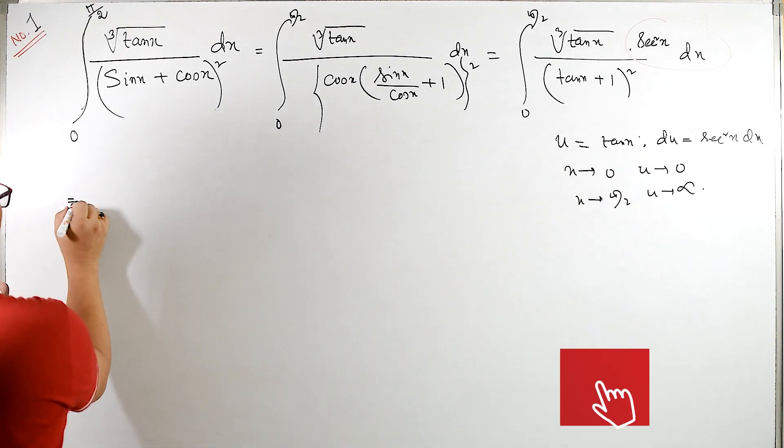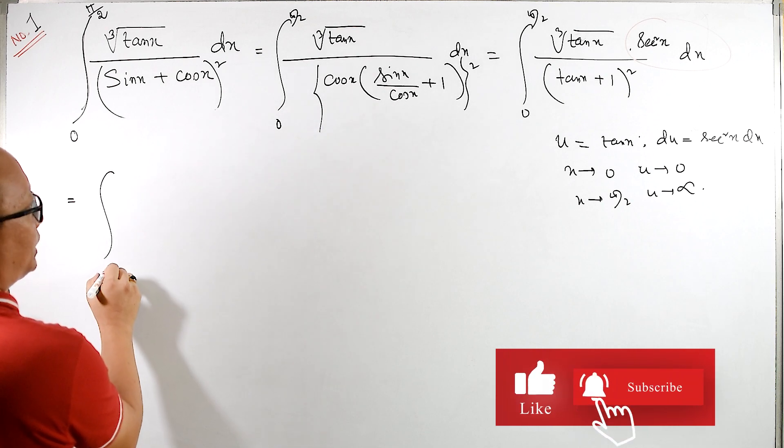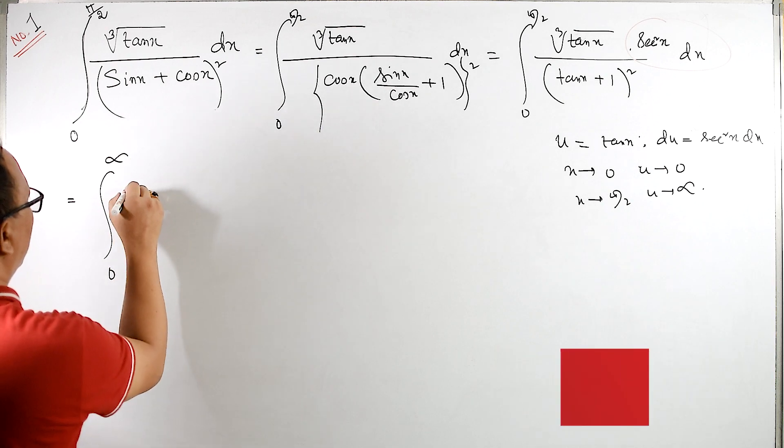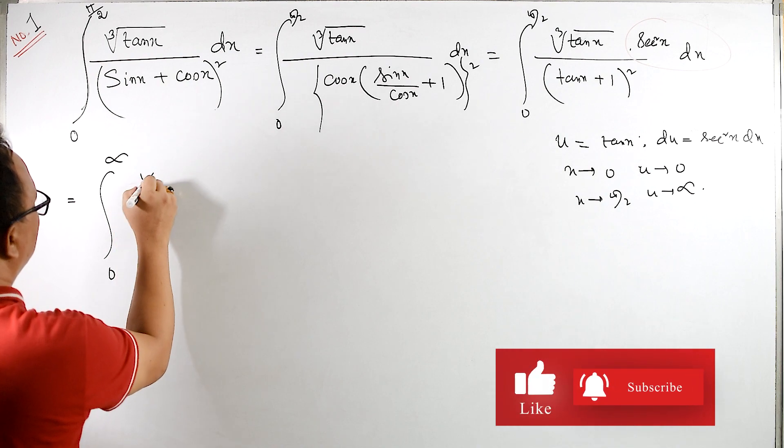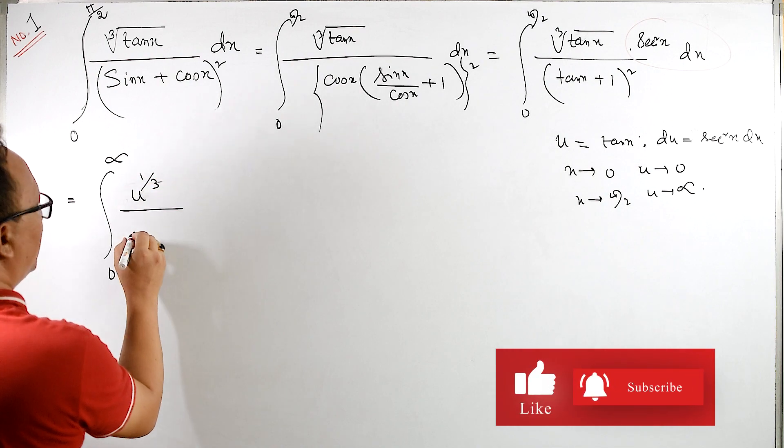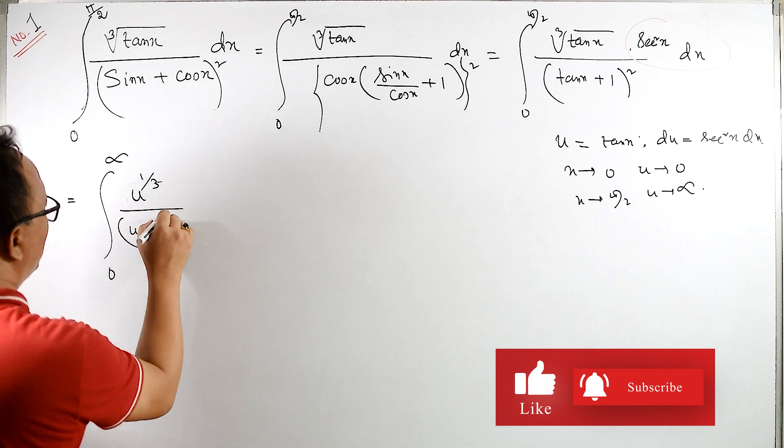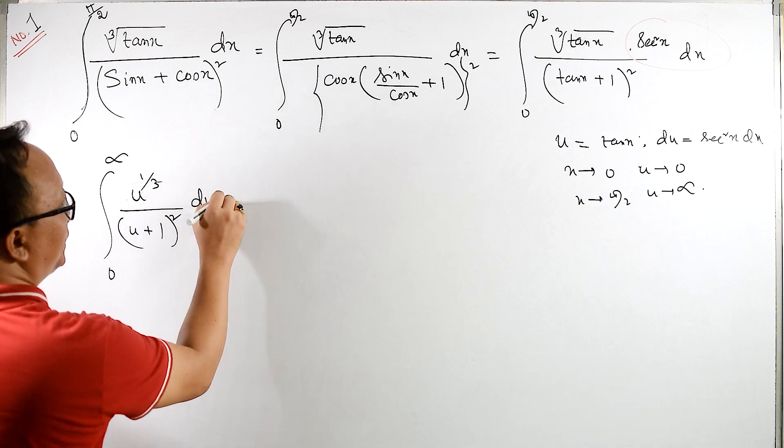So this equals to 0 to infinity, cube root of u, or you can say u raised to 1 by 3, and then u plus 1 raised to 2 into du.